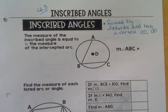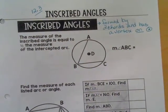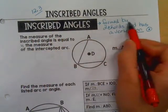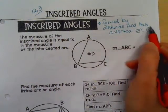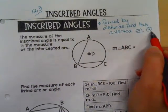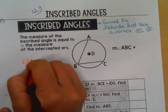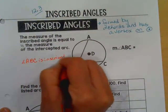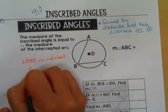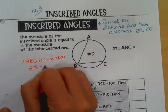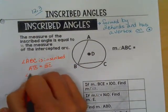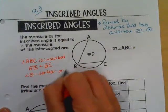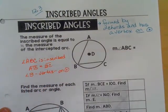Okay, section 12.3, inscribed angles. We need a definition first. An inscribed angle is formed by two chords and has a vertex on the circle. So angle ABC in this picture is inscribed. And it's made up of chords AB and BC, and angle B, the vertex, is on the circle. All of that makes this an inscribed angle.